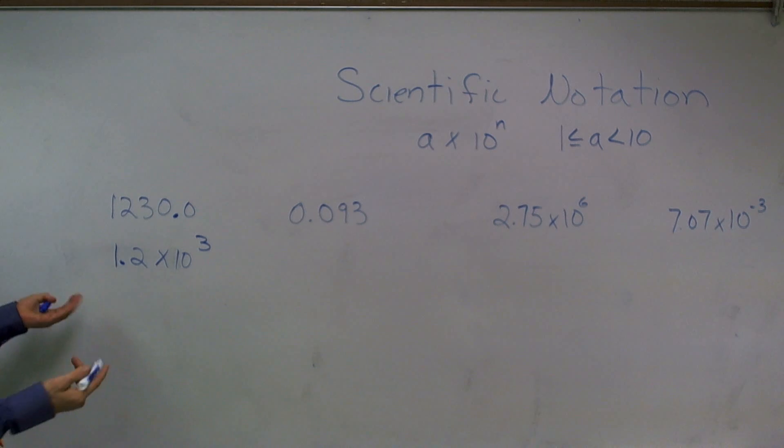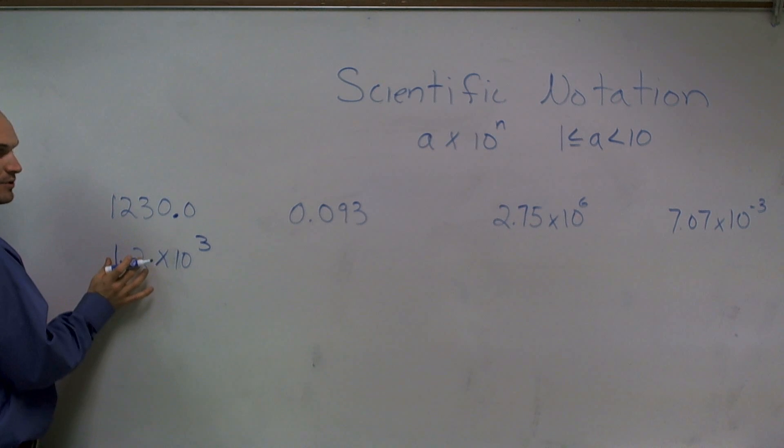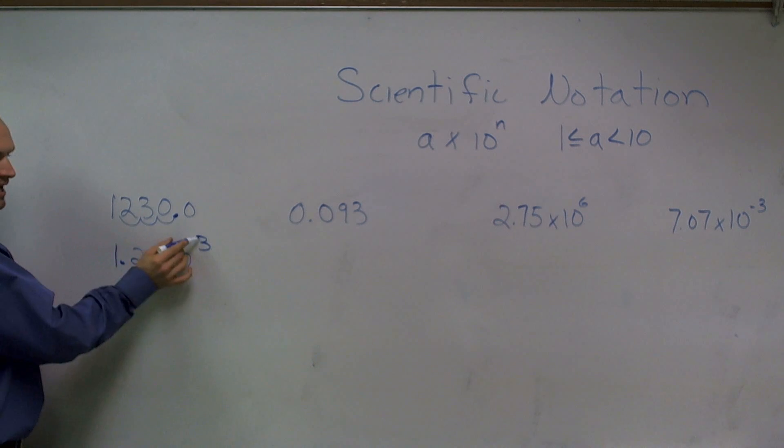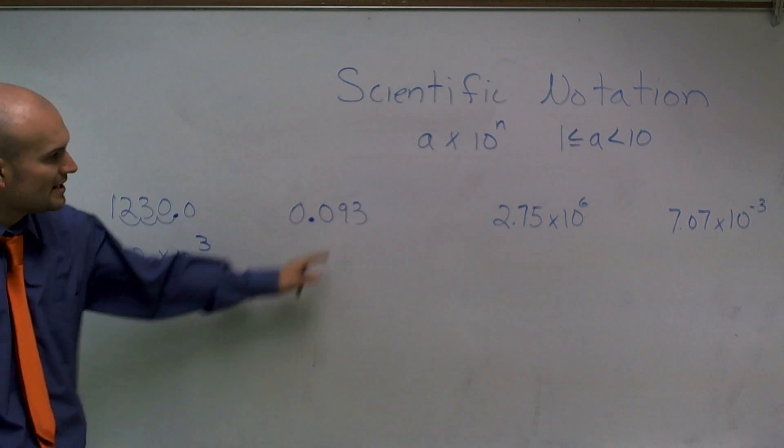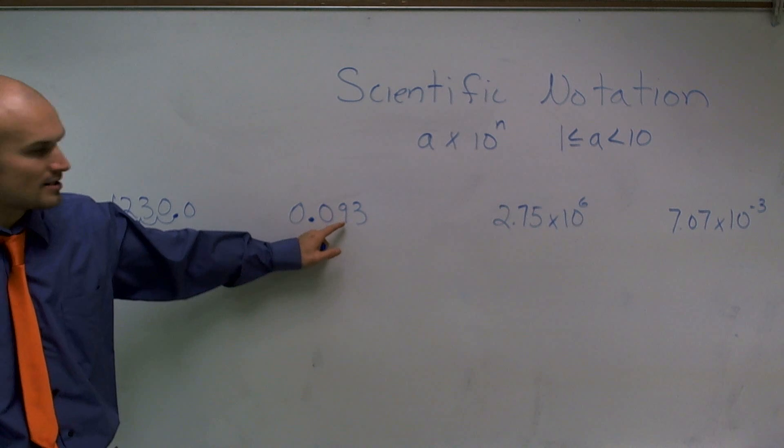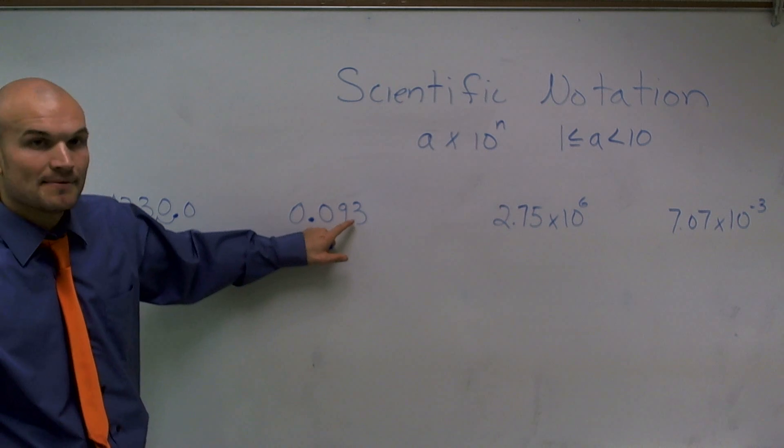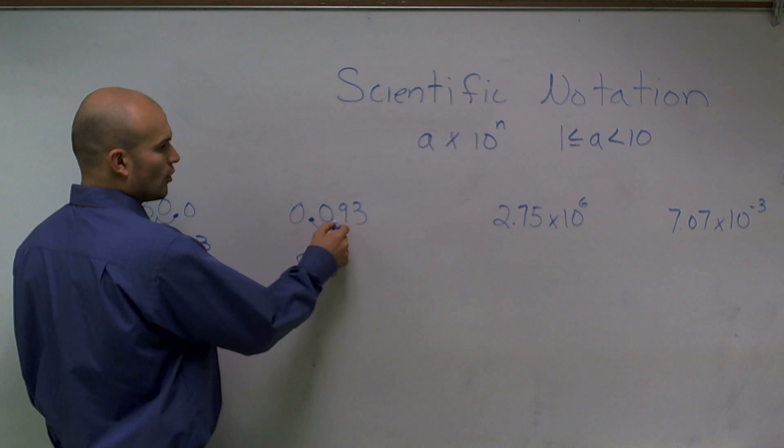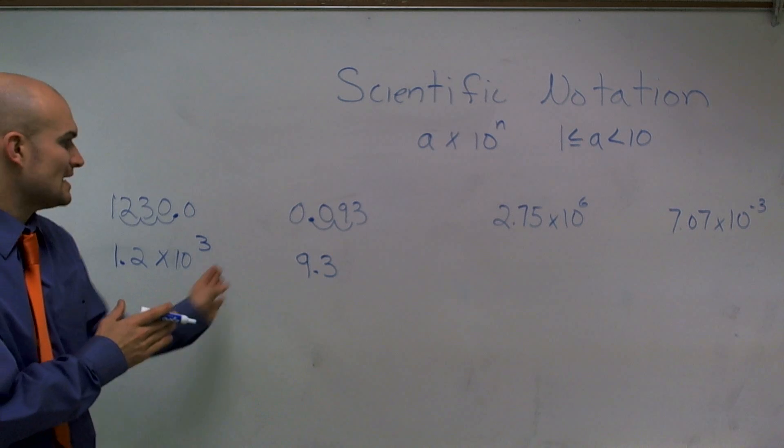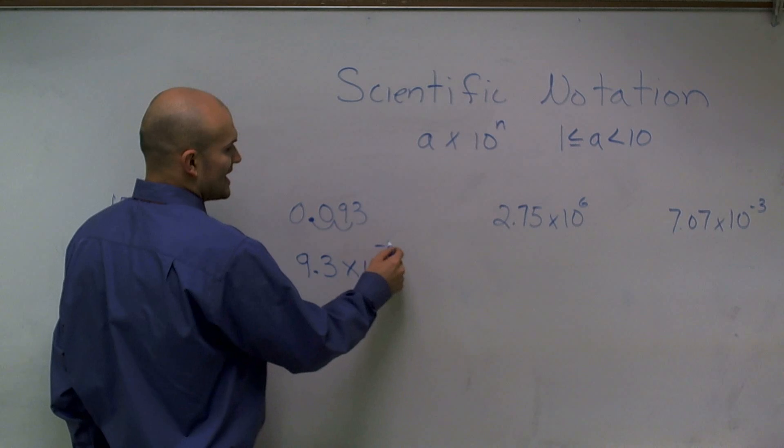So basically, what you want to do is choose your decimal point between your two values that are going to make it between 1 and 10, and then count how many places you moved the decimal point. And that is going to be your exponent. So here, my exponent is at 0. So now I need to say, where should I put the decimal point to make my number between 1 and 10? Well, this is going to be 9.3. That means I need to move the decimal point over 1, 2. Now, since I had to move it in the opposite direction, I am going to say that I move my decimal point 10 to the negative second power.